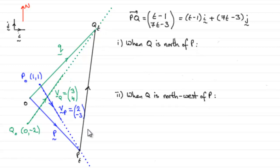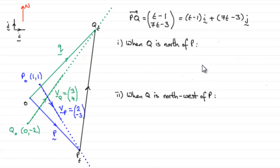When Q is north of P, we would expect this vector to be vertical — there would be no I component, it would just be made up of J's. That's the key to doing this. We know then that the I part of vector PQ must be 0; there must be no I's.